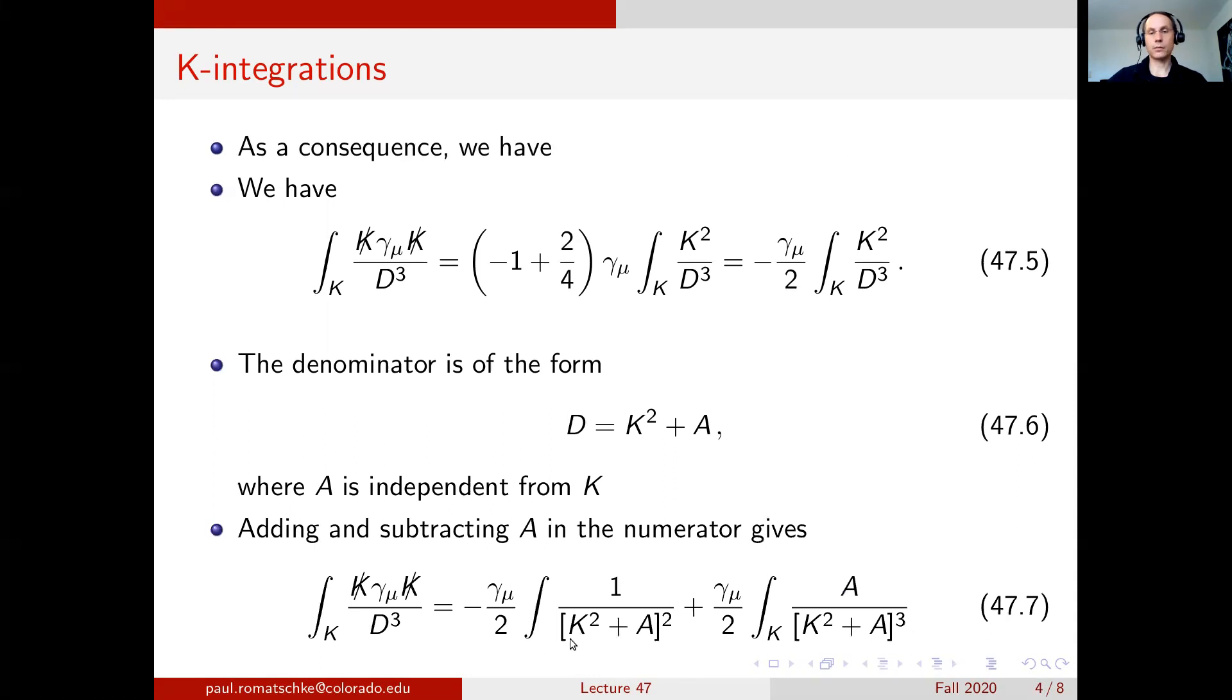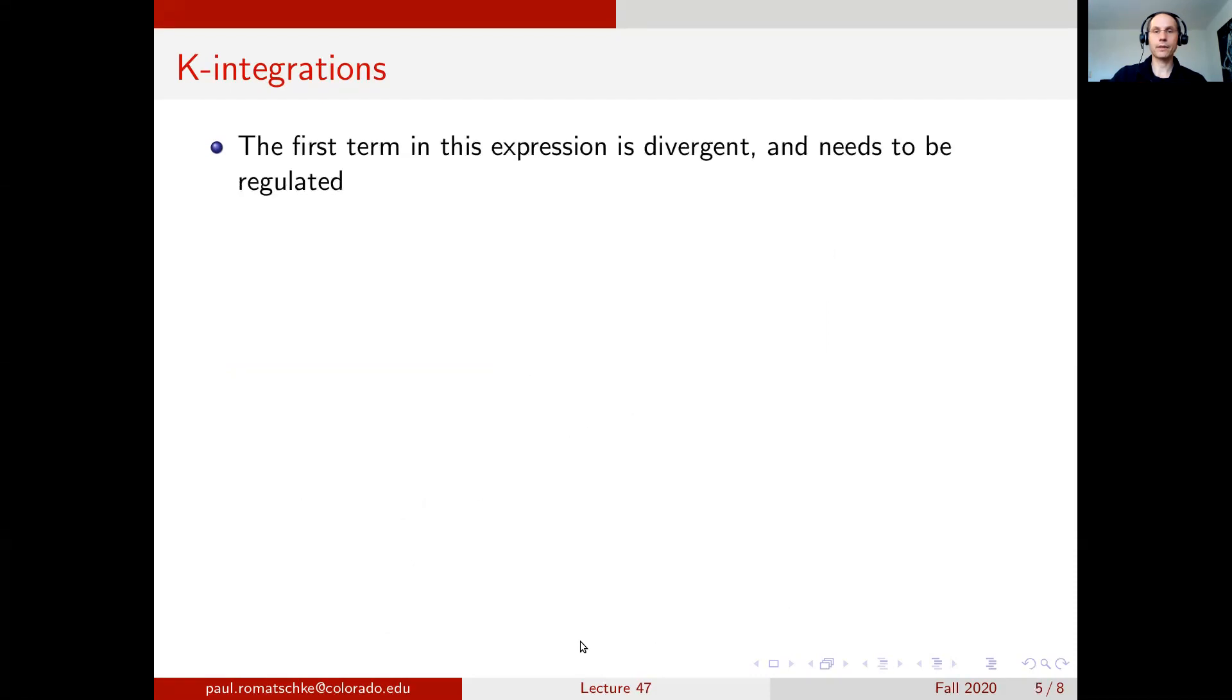This is an integral over four-dimensional momenta times one over momentum to the fourth, so that is of the form d^4k over k to the 4. That is logarithmically divergent, and as such it needs to be regulated. You can use dimensional regularization to regulate the integral. If you go to 4 minus 2 epsilon dimensions, we can use the techniques that we discussed around lecture 10 to write the result of this integral as 1 over epsilon minus the logarithm of A over mu squared, where mu is the renormalization scale that we have to introduce.